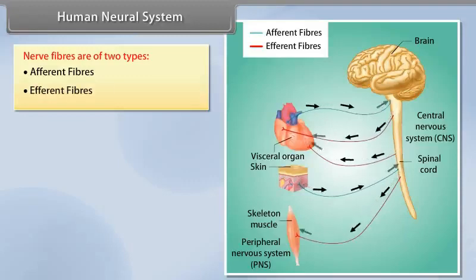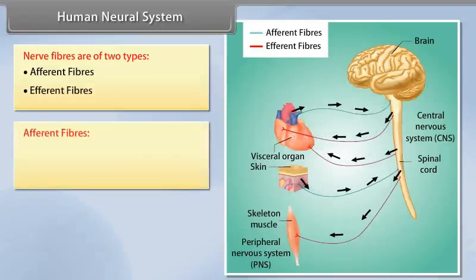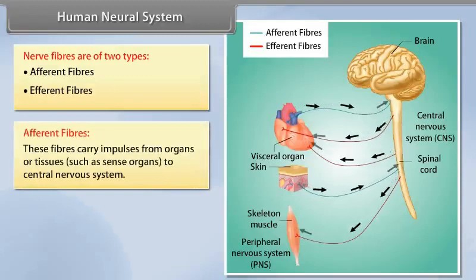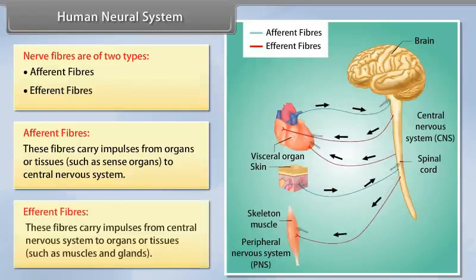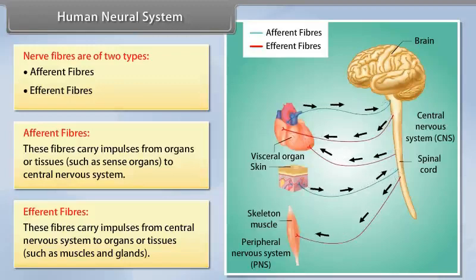Nerve fibers are of two types: afferent fibers and efferent fibers. Afferent fibers carry impulses from organs or tissues such as sense organs to central nervous system. Efferent fibers carry impulses from central nervous system to organs or tissues such as muscles and glands.